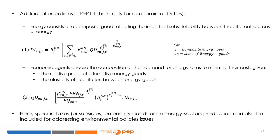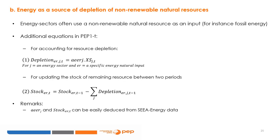It can be relevant to consider energy as a composite good reflecting the imperfect substitutability between different sources of energy. In order to include this hypothesis in the demand side of the economy, CES specifications must be added in the PEP1T model. Equation 1 shows that economic activities use different energy goods as intermediary products. Equation 2 shows that the demand of each type of energy good derives from the first-order conditions of cost minimization. Within this framework, any economic agent using energy chooses its energy composition to minimize costs, with the final choice depending on relative prices and degrees of substitution between energy goods. Specific taxes or subsidies on energy goods can also be included for environmental policy.